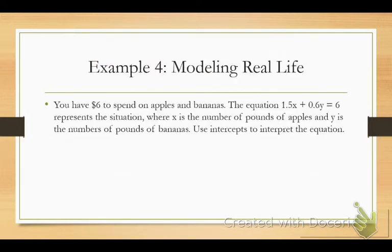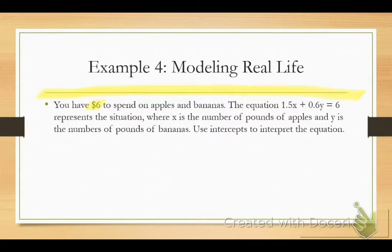Example 4 — we're going back to that all-or-nothing scenario. You have $6 to spend on apples and bananas. The equation your book gives you: 1.5x plus 0.6y equals 6. We have to understand what this means. 6 stands for 6 dollars. 1.5 stands for $1.50 a pound for apples, and 0.6 stands for 60 cents a pound for bananas.